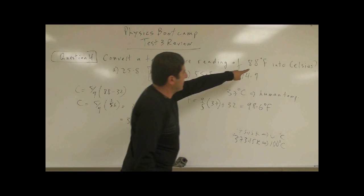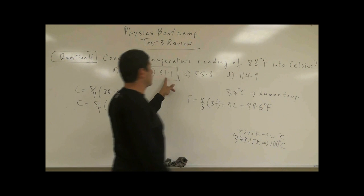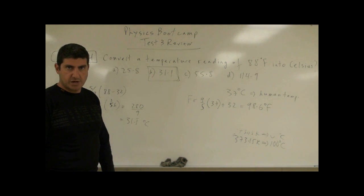So in this case, 88 Fahrenheit, which is colder than the human body temperature, that's equal to 31.1 degree Celsius. Thank you.